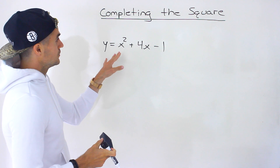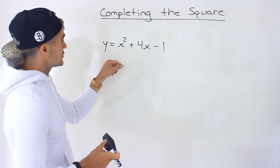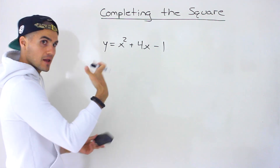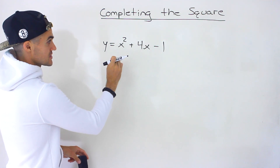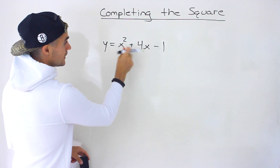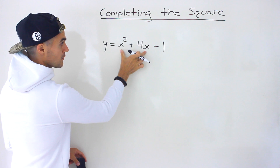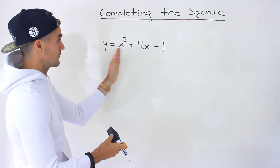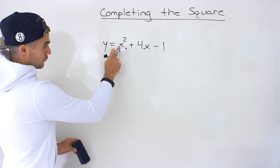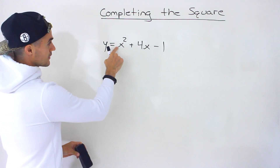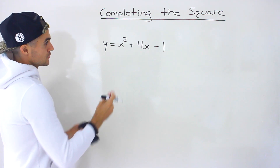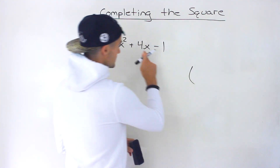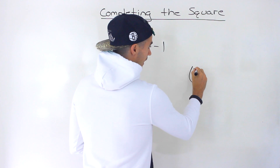So the first thing you want to do — this is a standard form quadratic — when completing the square, is make sure that the x squared has a 1 in front. Sometimes it will, sometimes it won't. Here it does already, which is nice. If it doesn't, you want to factor out whatever's in front from the first two terms. In the next example there will be something in front, so we'll have to do a preliminary step. But that's the first thing you want to check. Over here there already is a 1. And so what we do, if the a value is 1, is we take that b value — so it's positive 4. We take this, we divide it by 2, and then we square it.